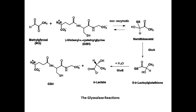For example, MG is a minor side product of the normal catalytic events catalyzed by the enzyme triosephosphate isomerase. Due to its chemical structure — that of a reactive dicarbonyl — intracellular buildup of MG can be cytotoxic to cells and has been associated with a number of medical conditions.